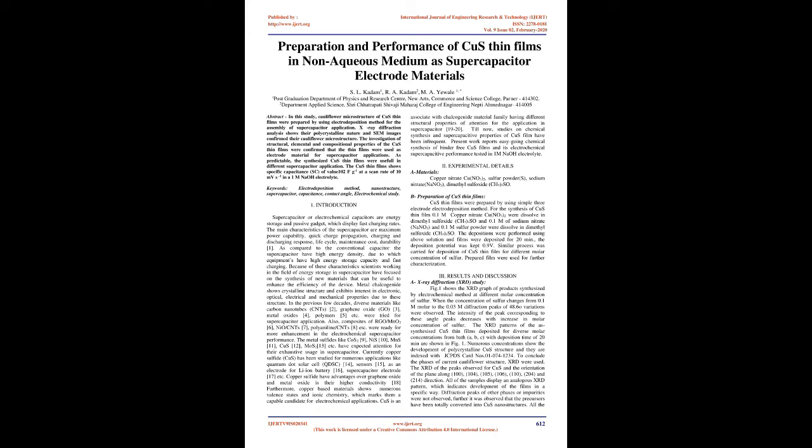Metal chalcogenides show crystalline structure and exhibit interest in electronic, optical, electrical and mechanical properties due to these structures. In the previous few decades, diverse materials like carbon nanotubes (CNTs), graphene oxide (GO), metal oxides, polymers, etc. were tried for supercapacitor application. Also, composites of RGO-MnO2, NiO-CNTs, polyaniline-CNTs etc. were prepared for more enhancement in the electrochemical supercapacitor performance.